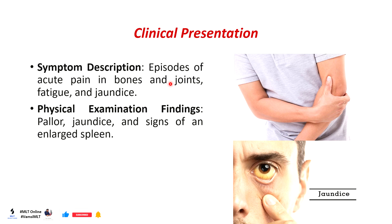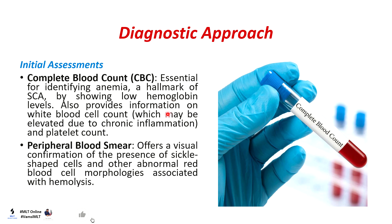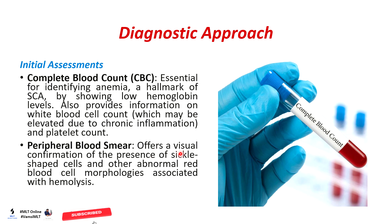Physical examination findings include pallor, jaundice, and signs of an enlarged liver. For the diagnostic approach, the CBC is essential for identifying anemia — a hallmark of sickle cell anemia — by showing low hemoglobin levels. It also provides information on white blood cell count, which may be elevated due to chronic inflammation, and platelet count. A peripheral blood smear offers visual confirmation of sickle-shaped cells and other abnormal red blood cells with hemolysis.